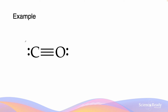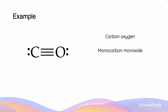Here are some examples demonstrating the steps to name different compounds. In the first compound there is one carbon and one oxygen. Because carbon is the least electronegative element, we name it first. Because there is one carbon and one oxygen, it becomes monocarbon monoxide. Because the first element is a singular carbon, we omit the mono prefix, so the final name is simply carbon monoxide.